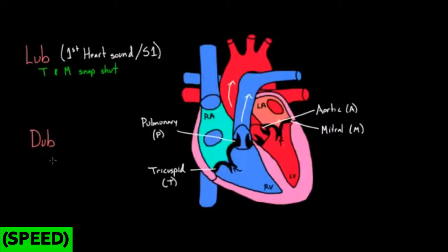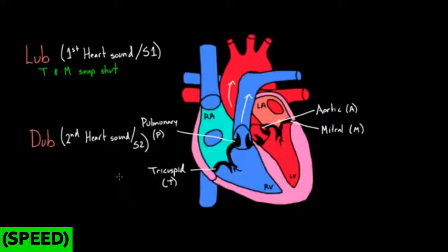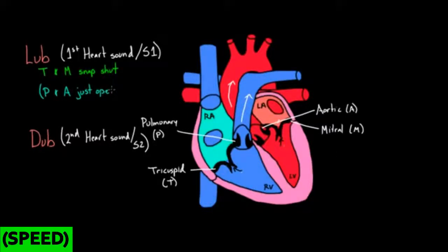The dub is called the second heart sound, or S2. You'll hear S1 when the tricuspid and mitral valves snap shut. You can also guess — and it's a very smart guess — that at the same time, the pulmonary valve and the aortic valve just opened. So if the tricuspid and mitral valves snap shut, the pulmonary and aortic valves just opened. The noise you're hearing is actually from the tricuspid and mitral snapping shut.